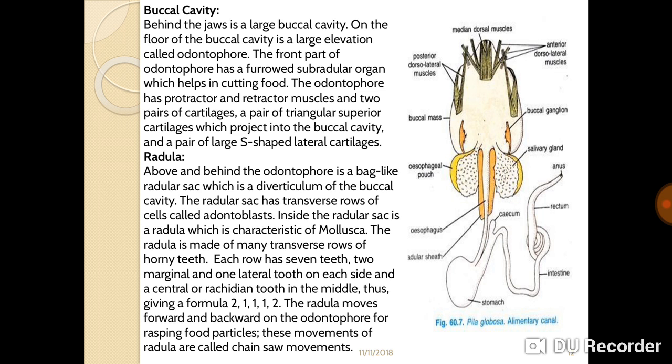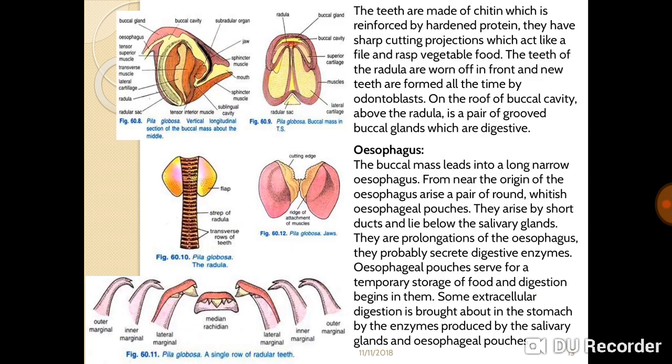The radula moves forward and backward on the odontophore for rasping food particles. This movement of the radula is called the chainsaw movement. The teeth are made up of chitin reinforced by hardened proteins with sharp cutting projections that cut like a file and rasp vegetable food. The teeth of the radula are worn off in front and new teeth are formed continually by odontoblasts on the roof of the buccal cavity.